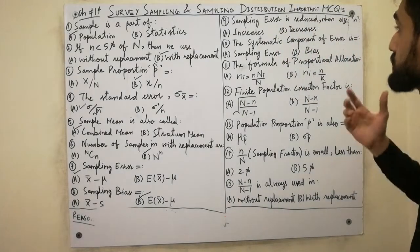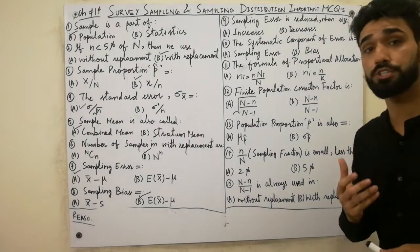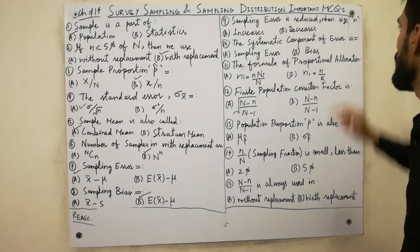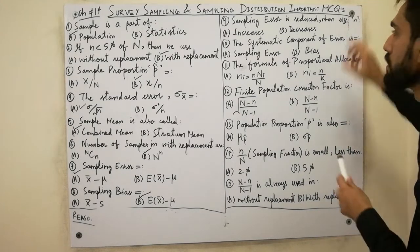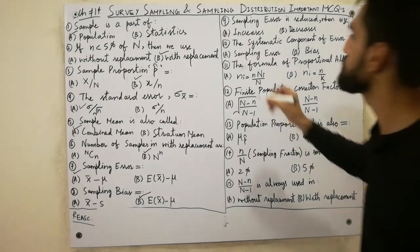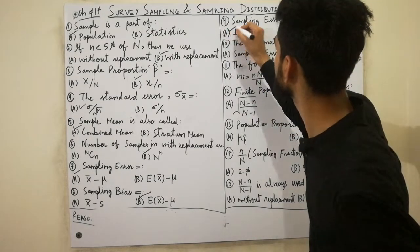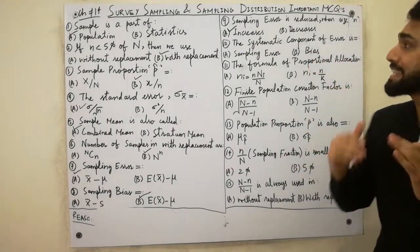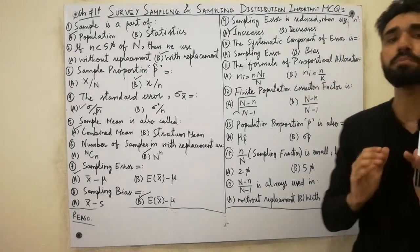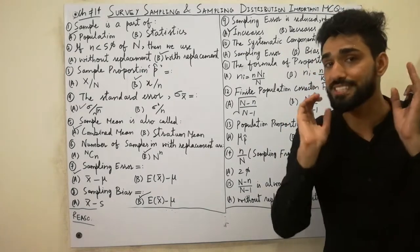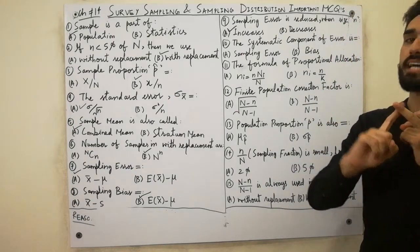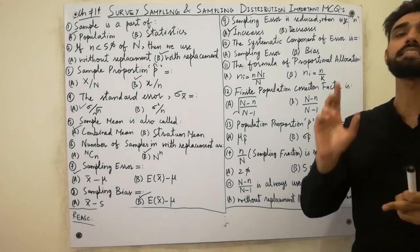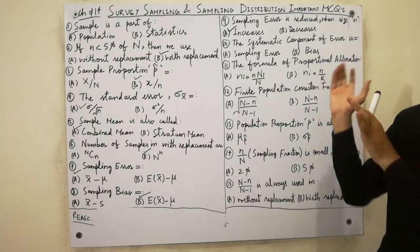MCQ 9 is very, very important: sampling error is reduced when sample size increases. As the sample size increases, sampling error must be reduced. Must remember: when sample size increases, sampling error is reduced.